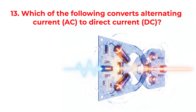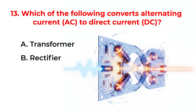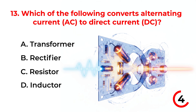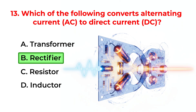Which of the following converts alternating current (AC) to direct current (DC)? A. Transformer. B. Rectifier. C. Resistor. D. Inductor. Correct answer is option B. Rectifier.